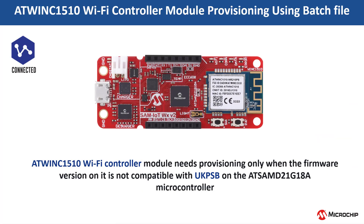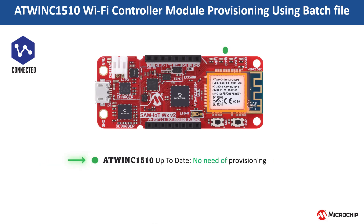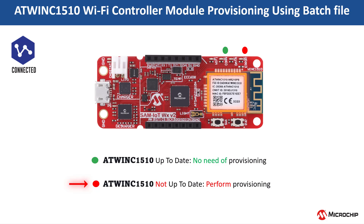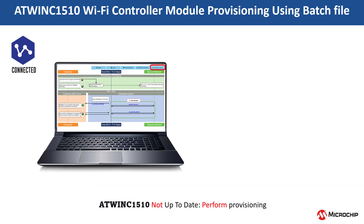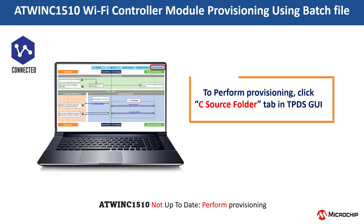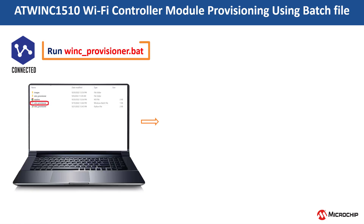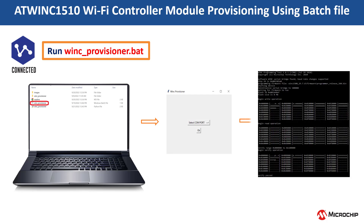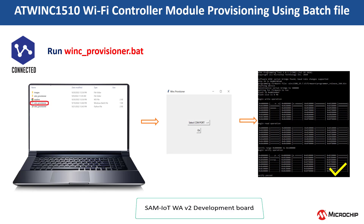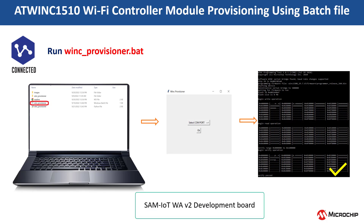Provision or upgrade the ATWINK 1510 Wi-Fi controller module with certificates. The green LED indicates that the ATWINK 1510 Wi-Fi controller module is provisioned. The red LED indicates that the firmware on the Wi-Fi controller module is not up-to-date and needs provisioning, as the firmware is not compatible with the software on the ATSAM D21 G18A microcontroller. To perform the ATWINK 1510 provisioning, click the C source folder tab in the TPDS GUI, then run the WINK provisioner batch file. Note that now that the board is provisioned with the AWS cloud platform, we will call it SAM IoT WA instead of WX V2 development board.